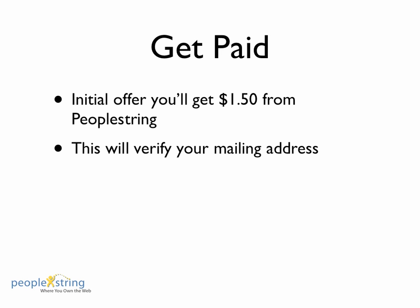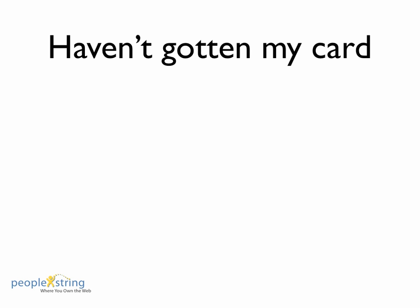This is your initial offering from People String and you're going to get paid a dollar and fifty cents for completing that offer. This basically verifies your mailing address, telling marketers that this is a valid mailing address so they'll know where to send all your direct mail. Then you'll get paid to receive both postal mail and emails.